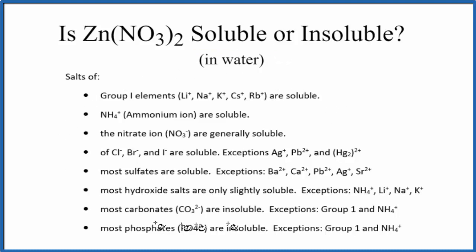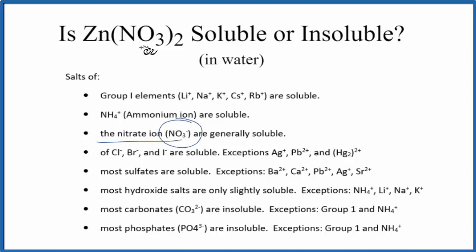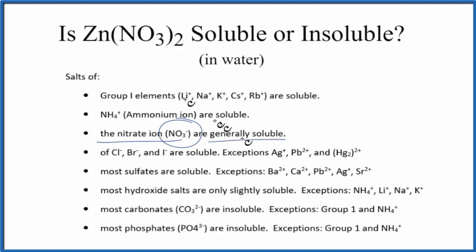So we have these general solubility rules here to guide us. As we look at the rules, it says we have a nitrate ion, that NO3-, here's our nitrate ion, we have two of them. Compounds with nitrate ions are generally soluble. So according to our solubility rules, Zn(NO3)2 should be soluble in water.